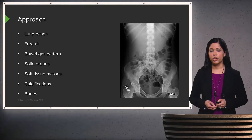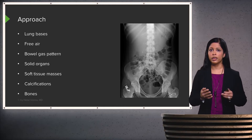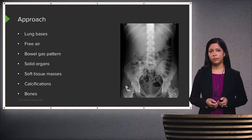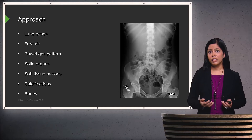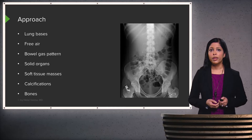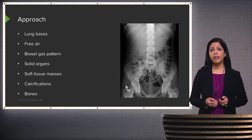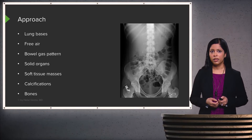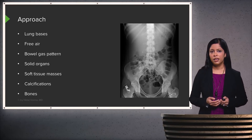As with all of radiology, it's important to have a standard approach so that you make sure you look at every aspect of the film. I start off with the lung bases — even though we're performing an abdominal film, a patient may have an abnormality at the lung base you don't want to miss. I then look for free air, then the bowel gas pattern, then the solid organs, any abnormal soft tissue masses, abnormal calcifications, and lastly all of the bony structures.